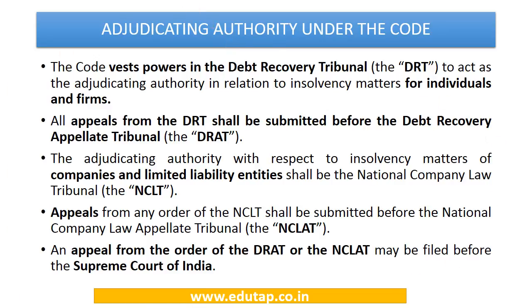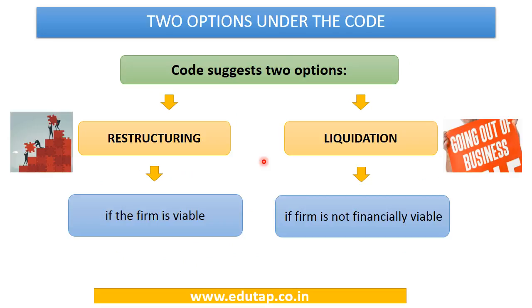Under the code, two options are available: restructuring or liquidation. If the resolution plan is approved, the company's debt is restructured and it can continue business at a reduced scale. If the firm is not financially viable and the plan is not approved by the required majority, the company undergoes liquidation.